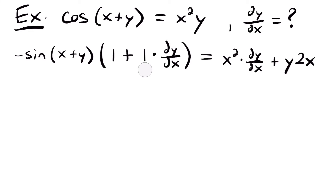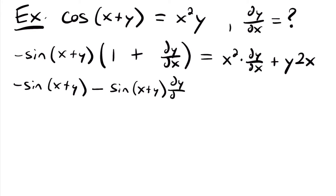Simplifying the left side: we have negative sine(x plus y) times (1 plus dy/dx). Distributing gives negative sine(x plus y) minus sine(x plus y) dy/dx, and that equals x squared dy/dx plus 2xy. The next step is to get all dy/dx terms on one side. We add the sine term over and subtract 2xy: negative sine(x plus y) minus 2xy equals x squared dy/dx plus sine(x plus y) dy/dx.